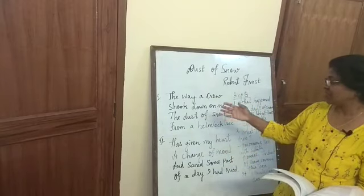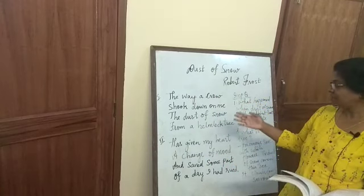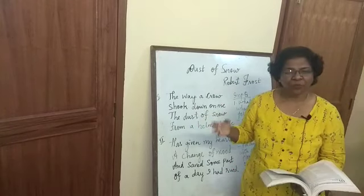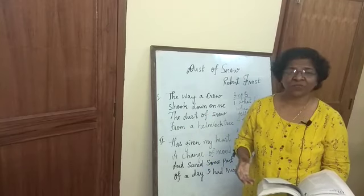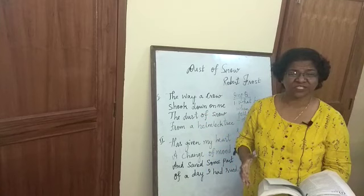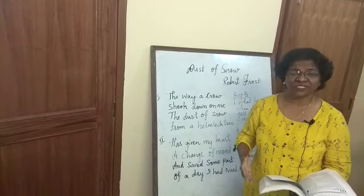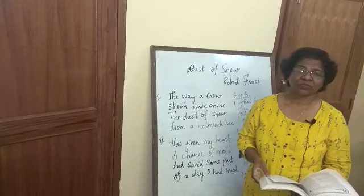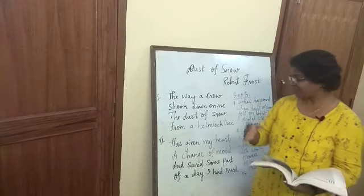The first stanza reads: 'The way a crow shook down on me the dust of snow from a hemlock tree.' One day, Robert Frost was sitting under a hemlock tree. He had some sadness within him, but he did not know the reason. While he was sitting there, suddenly a crow came and shook the branches.